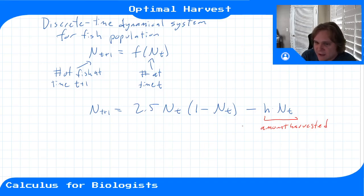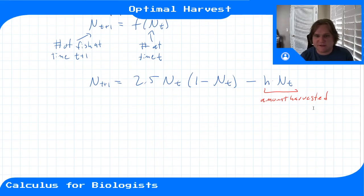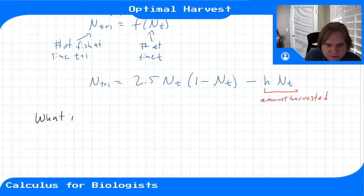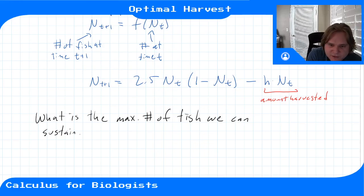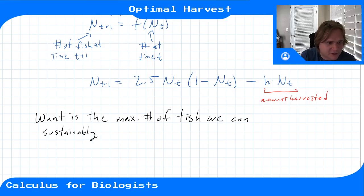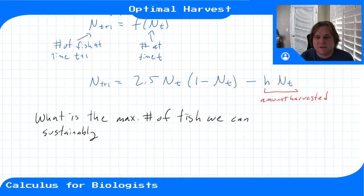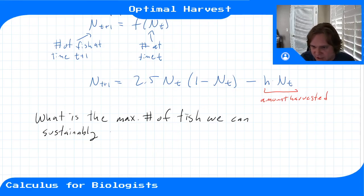The optimization problem here is: what is the maximum number of fish we can sustainably harvest? We don't want to just take all the fish out on the first generation, because then there won't be any fish left for the next generation. We want to take out a lot of fish, but not so many that we kill the population and can't fish it again next year.